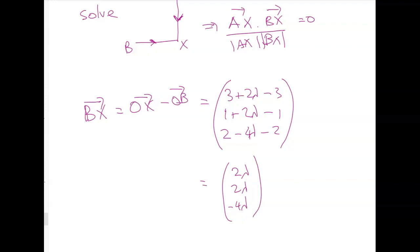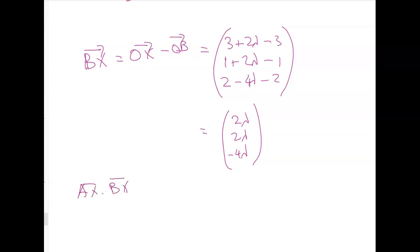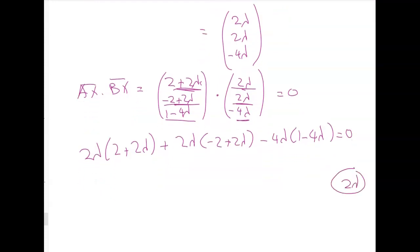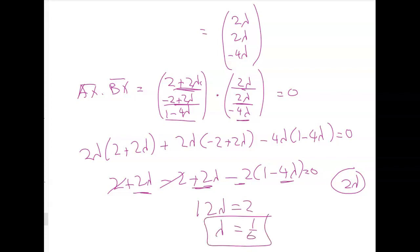And now what I have to do is take the dot product, which is very simple. So AX dot BX is equal to 2 plus 2 lambda, negative 2 plus 2 lambda, 1 minus 4 lambda dot this. And working that out is an easy dot product. I get 2 lambda into 2 plus 2 plus lambda, and so on. Now I'm going to solve for lambda. But I can divide both sides through by 2 lambda. And I get 2 plus 2 lambda minus 2 plus 2 lambda minus 2 times 1 minus 4 lambda is equal to 0. When I clean all of that up, I get 4 lambda plus 8 lambda. So 12 lambda is equal to 2. And I finally get my value of lambda, which is 1 sixth.